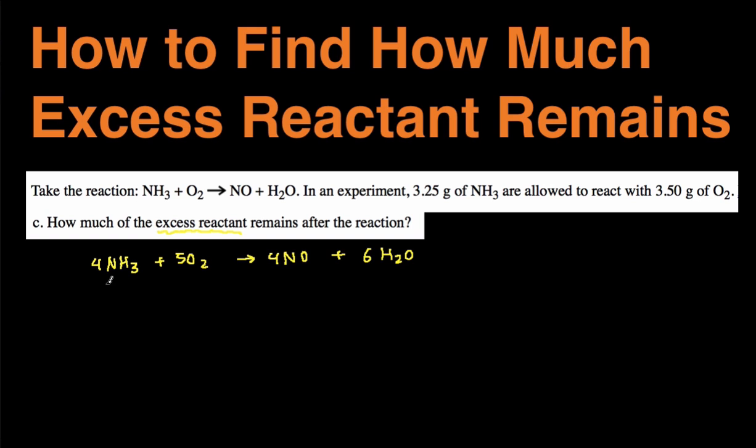Once we have the balanced chemical reaction, we need to first determine which of these reactants are limiting. So we have two reactants: NH3 and then O2. And to do that, I'm going to convert both of them into moles first.